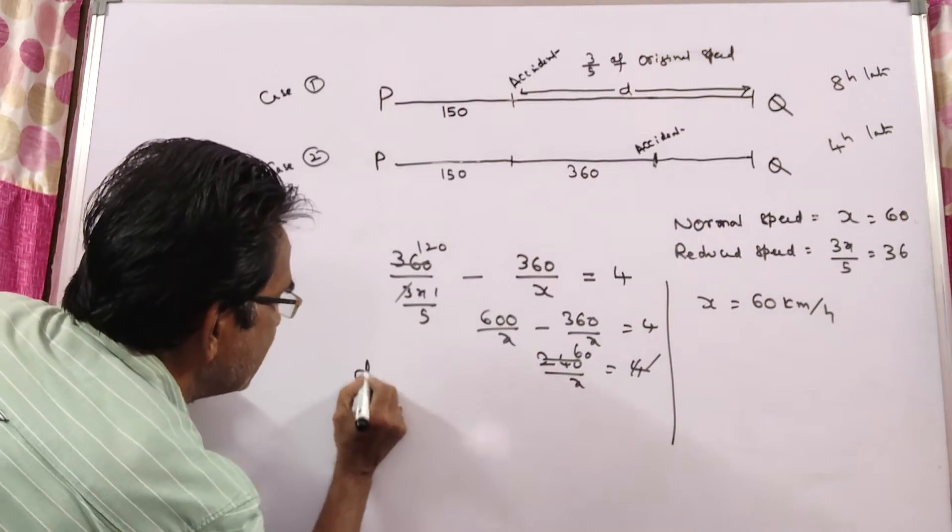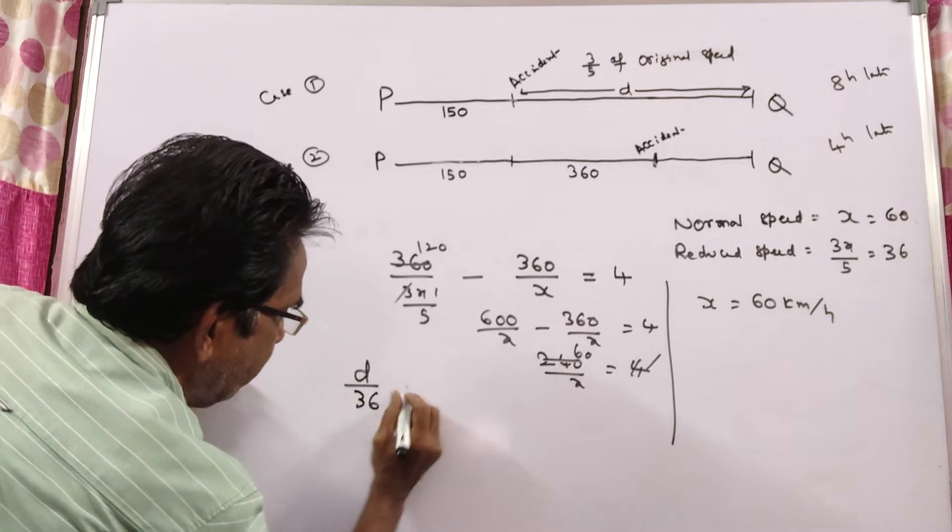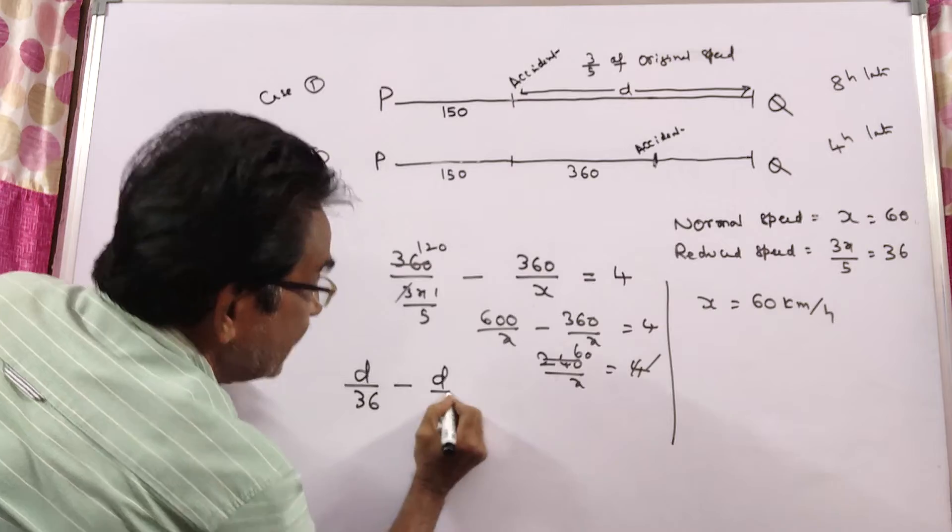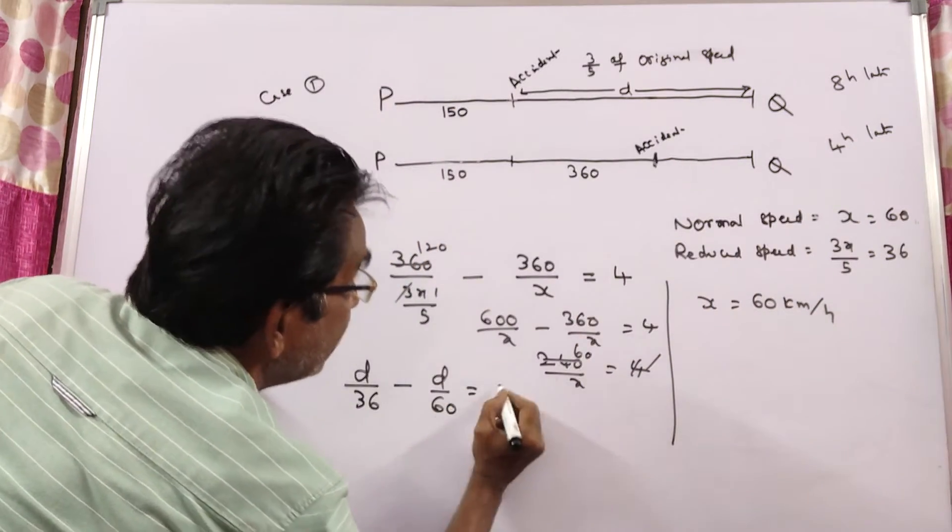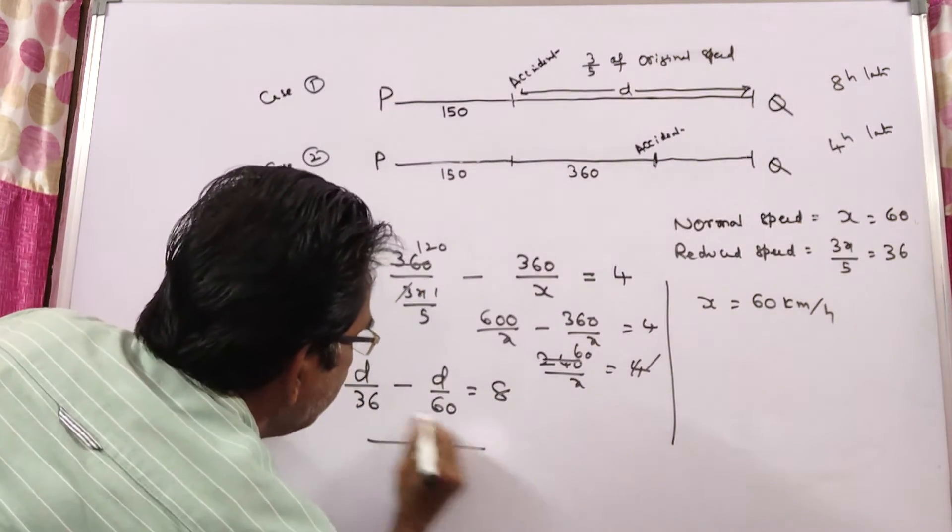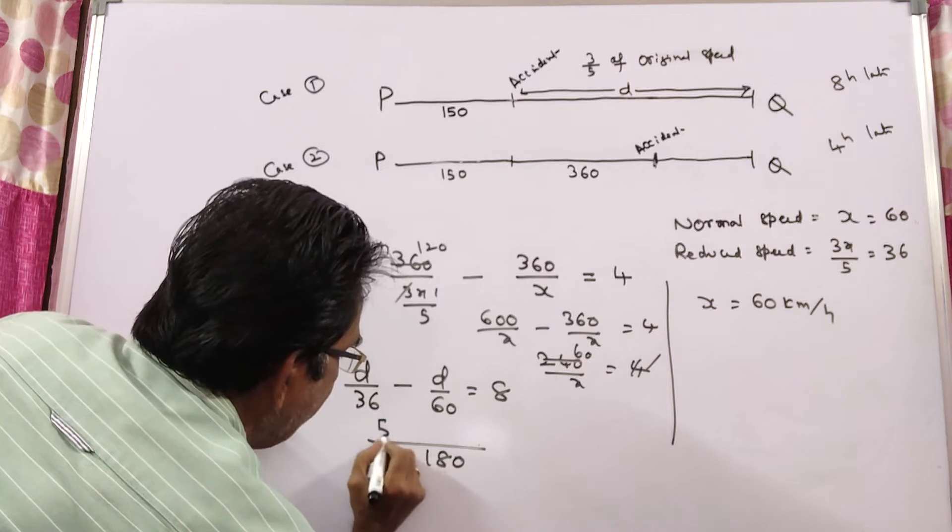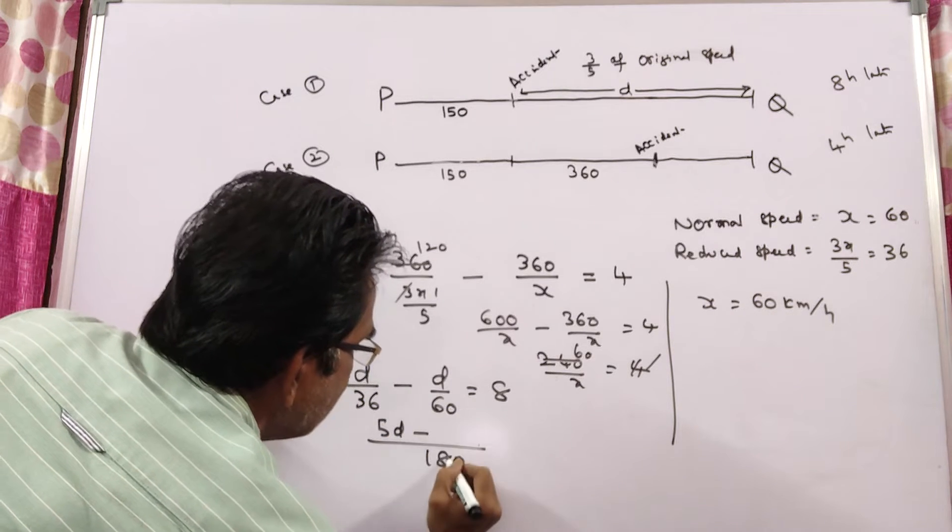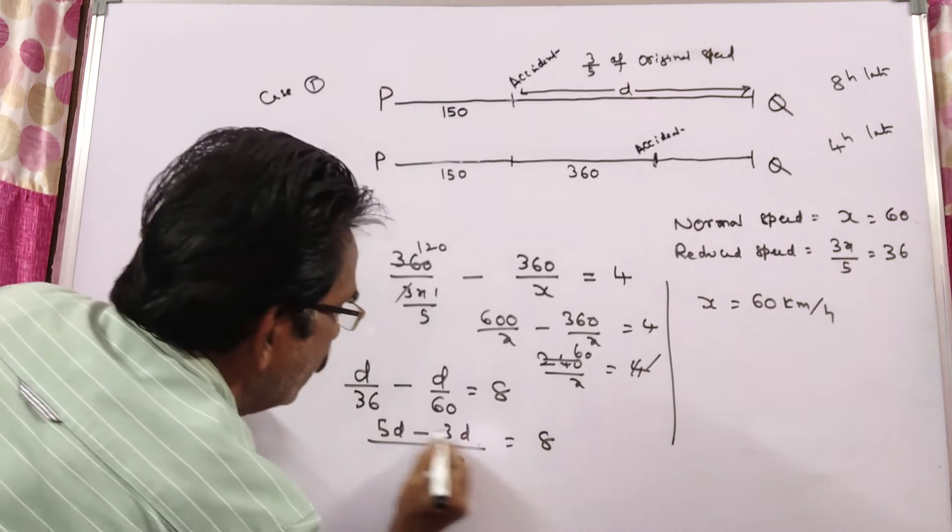So, D kilometers with reduced speed, that is 36 kmph. D kilometers with reduced speed, 60 kmph, difference between these two timings is 8 hours. D kilometers with reduced speed, that is 36, 5d minus 3d is equal to 8, 2d.